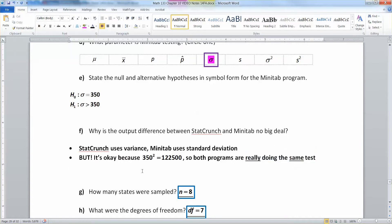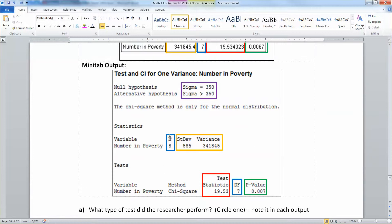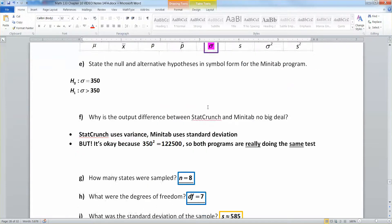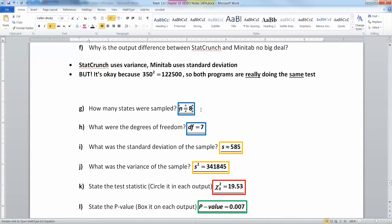Now how many states were sampled? Well, Minitab, it's really easy to see, it's right here, n equals 8. But if you had StatCrunch, you'd have to go from your degrees of freedom, which is 7, and then add one to it, which gets you 8. So I won't actually give you both programs on an exam, so you'll have to be able to know how to do it each way. So n equals 8 because degrees of freedom is 7, or vice versa. Since n equals 8, then your degrees of freedom is 7.